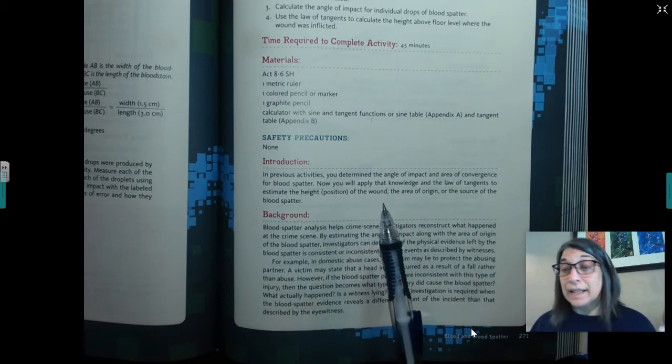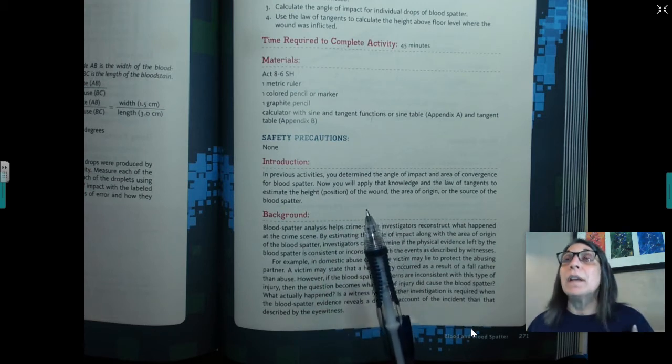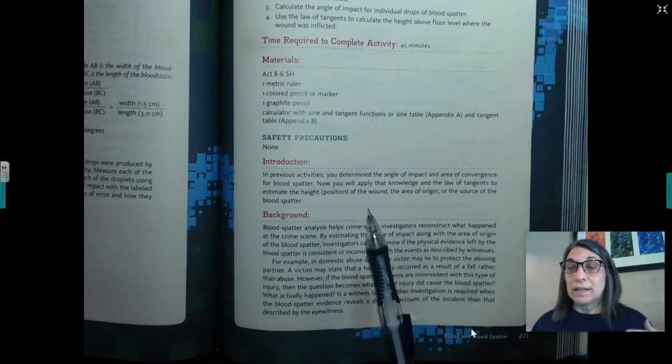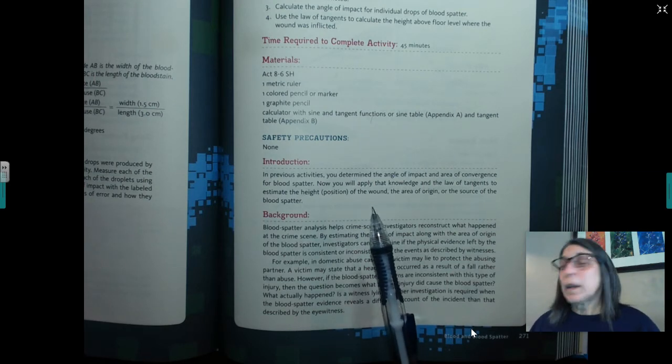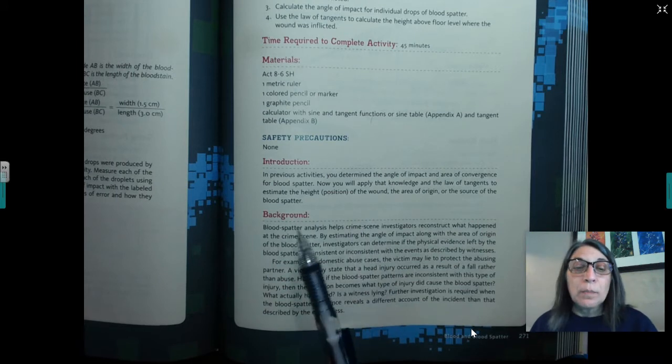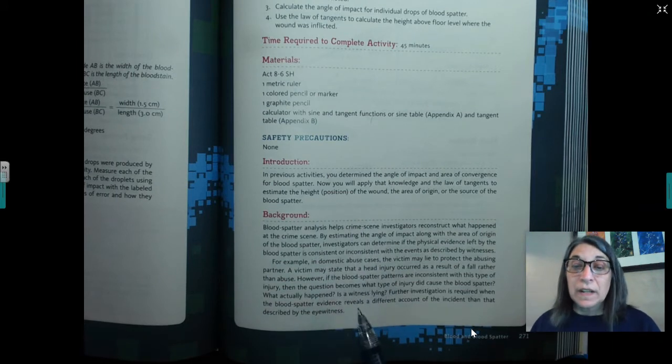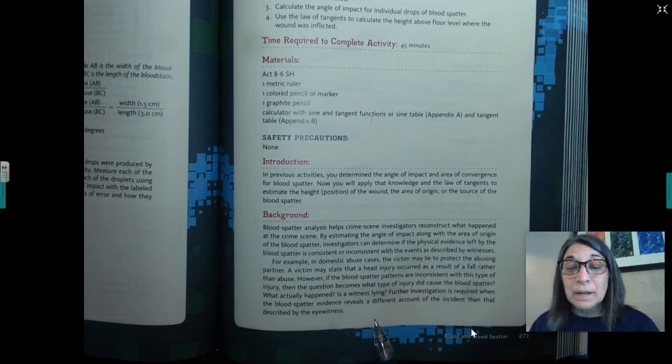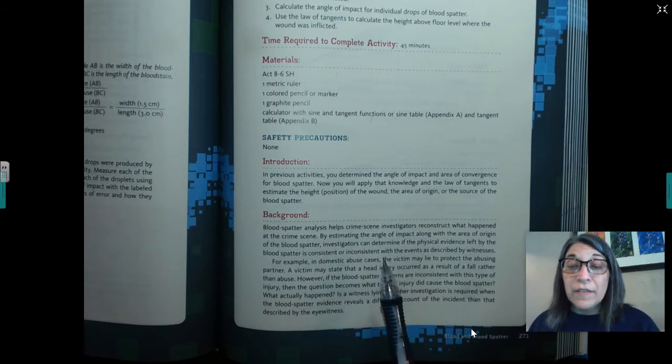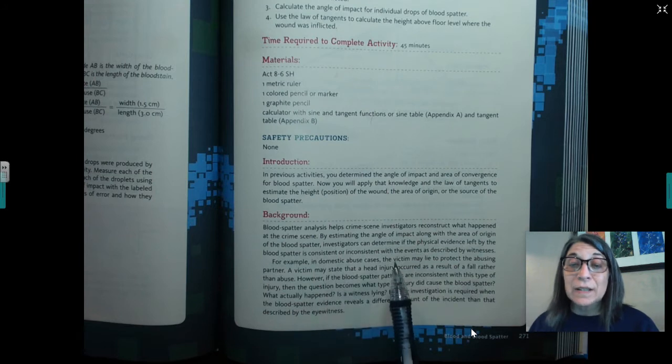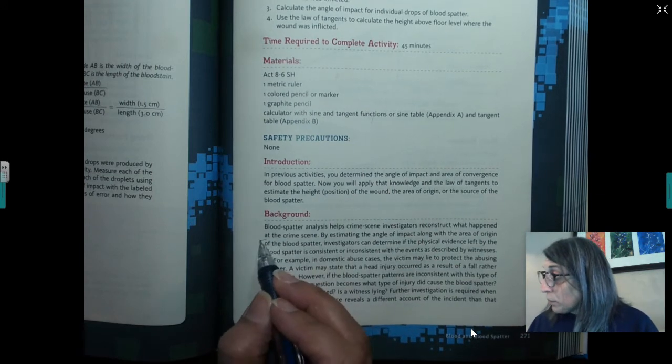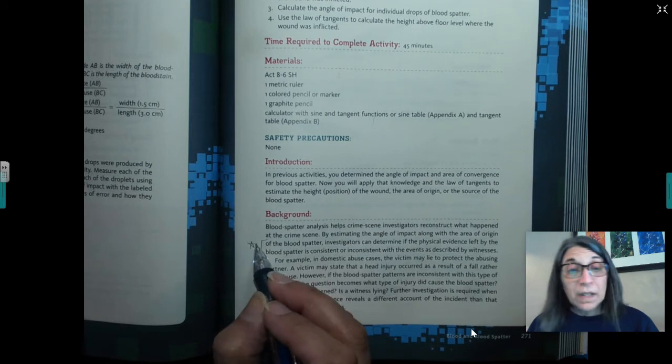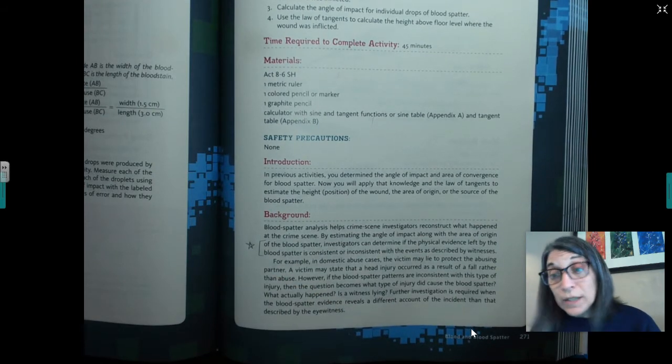Now you're gonna apply that knowledge and log tangents to estimate the height or position of the wound, the area of origin or the source of the blood spatter. So basically, yes, we have a 2D idea of where the blood was coming from, but now we want to get an actual height. Blood spatter analysis helps crime scene investigators reconstruct what happened at the crime scene by estimating the angle of impact along with the area of origin. Investigators can determine if the physical evidence left behind by the blood spatter is consistent or inconsistent with the events described by witnesses.